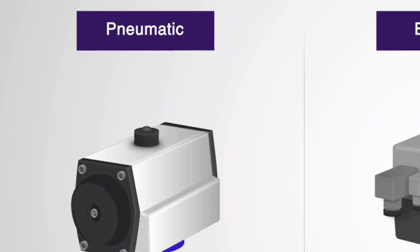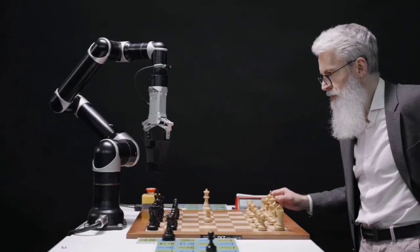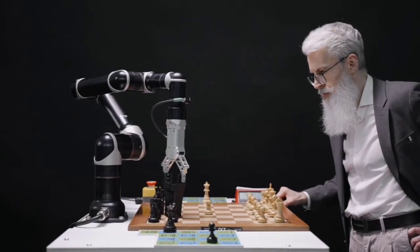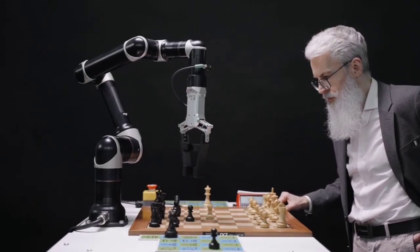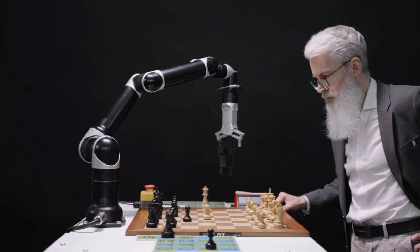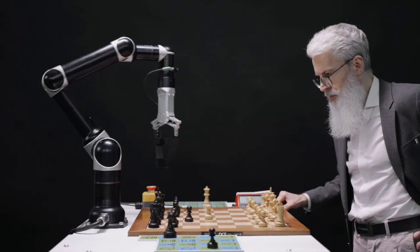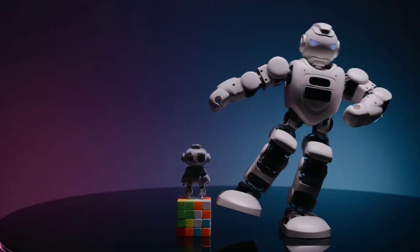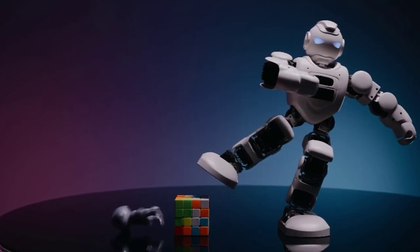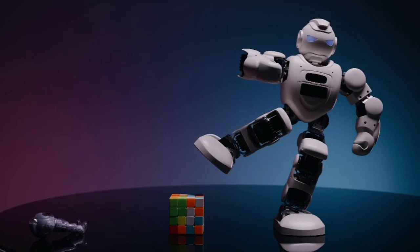The third type is pneumatic actuators. A pneumatic actuator uses energy formed by vacuum or compressed air at high pressure to convert into either linear or rotary motion. The best example of pneumatic actuators is their use in robotics, and that is why they have become so popular. Whenever we talk about robots, we never forget to name actuators — they are the hero behind robot technology and other automated systems.